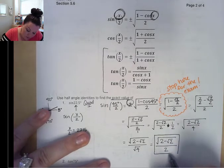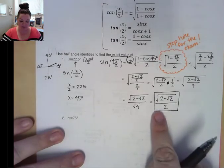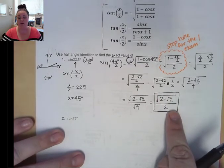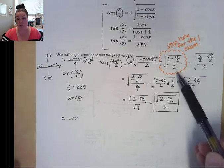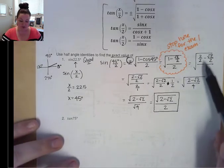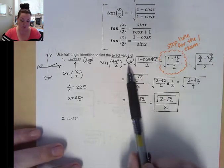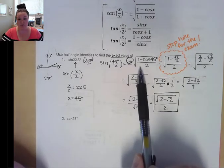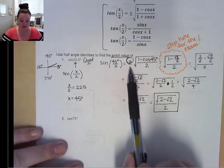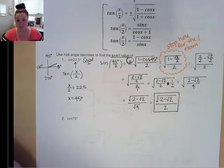Again, when working in MyMathLab you'll need to simplify all the way down to that point. On an exam I'm fine with stopping much earlier — I'm just looking for: did you get the correct x angle, use the correct formula, correctly choose positive or negative, and plug in the correct trig function value.